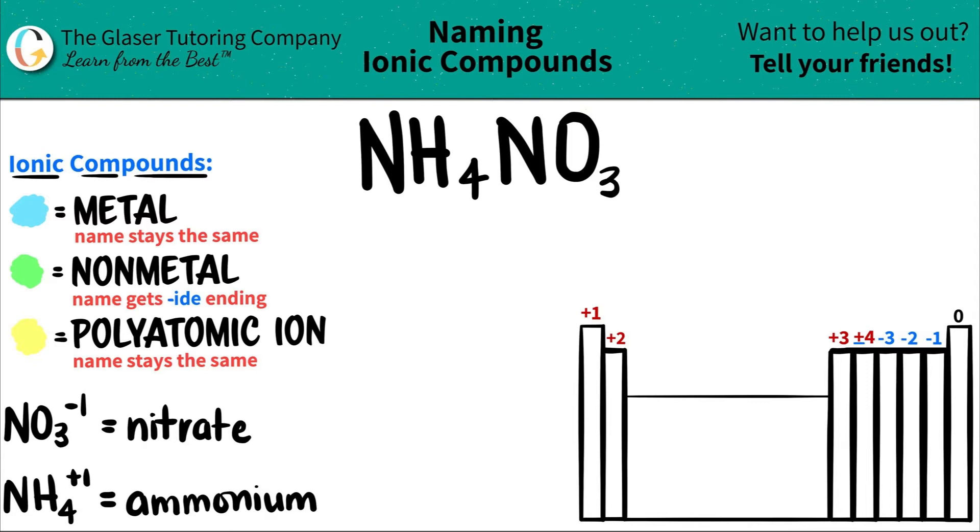The hardest part is that polyatomic ions are never on the periodic table. They have to be memorized, but that's why I wrote down the polyatomics that we're going to be seeing here. You just need to use flashcards or keep writing these out, but you need to memorize these because they're going to be with you for the rest of the chemistry course.